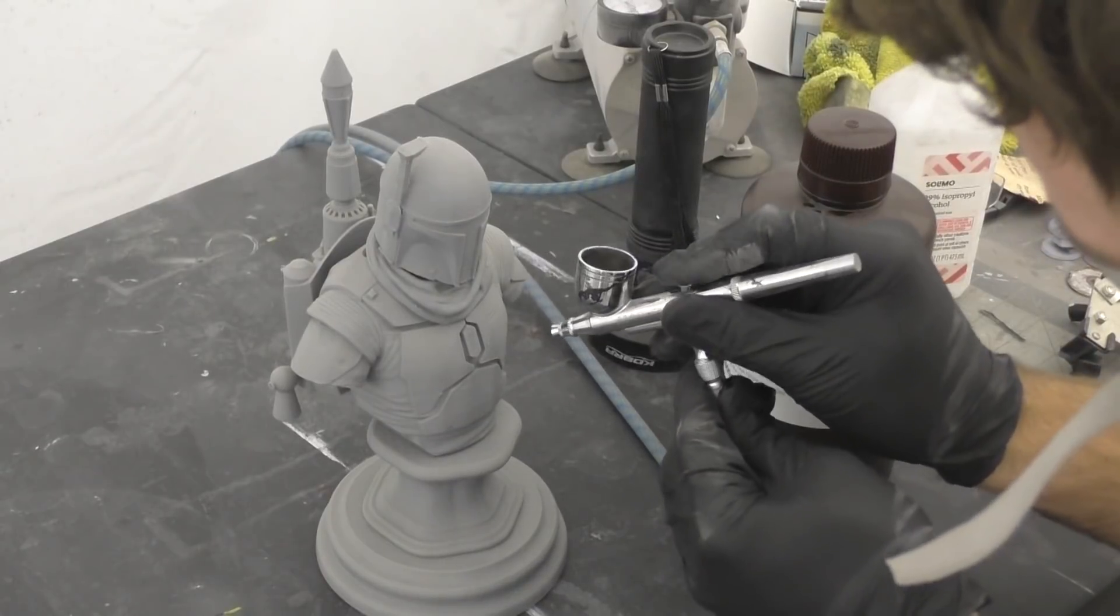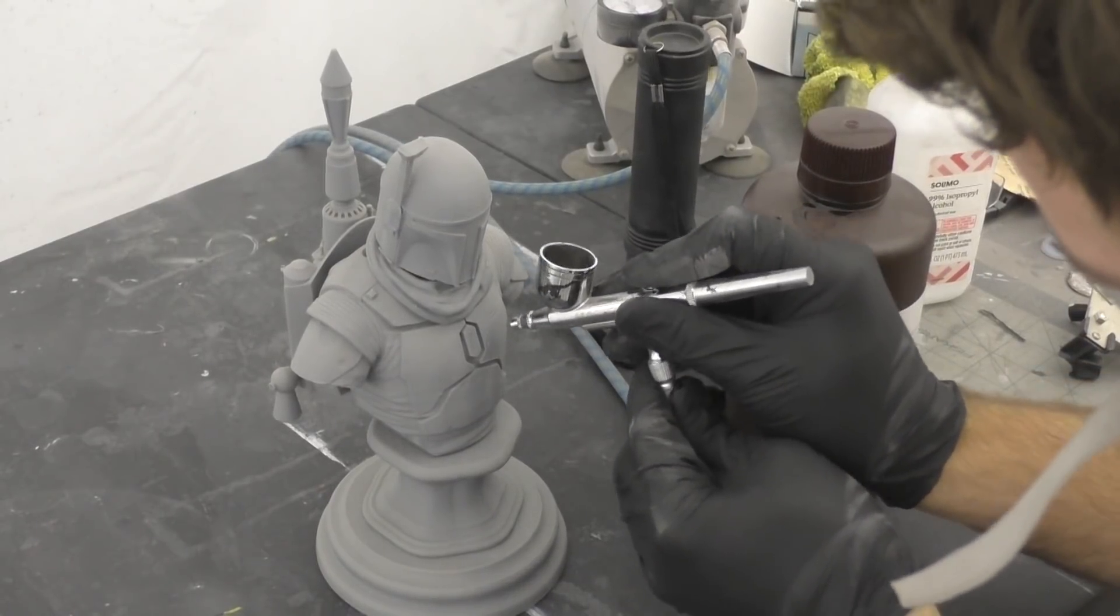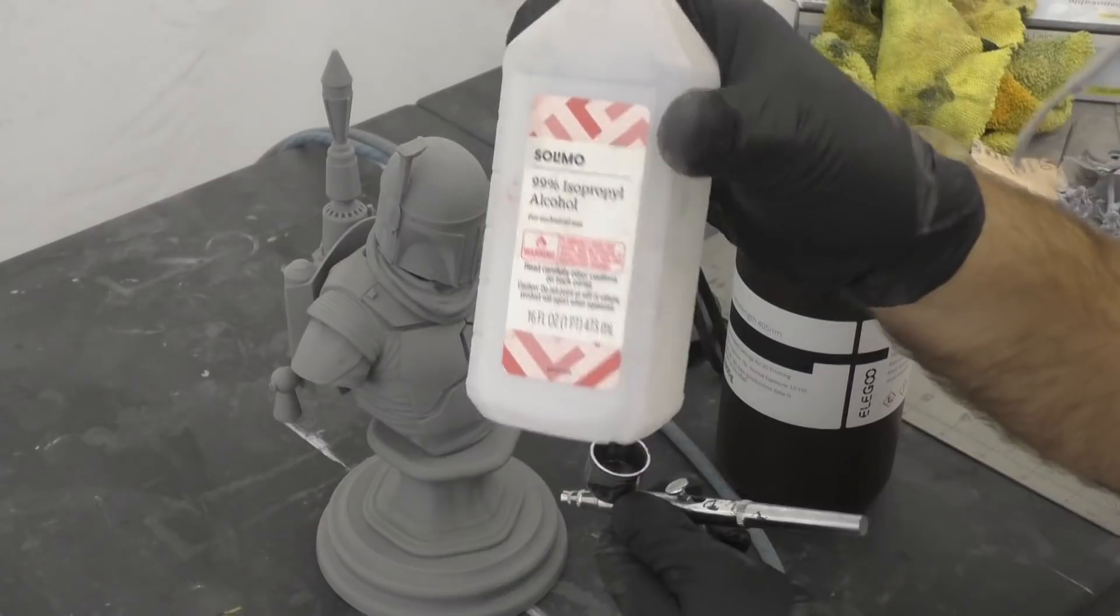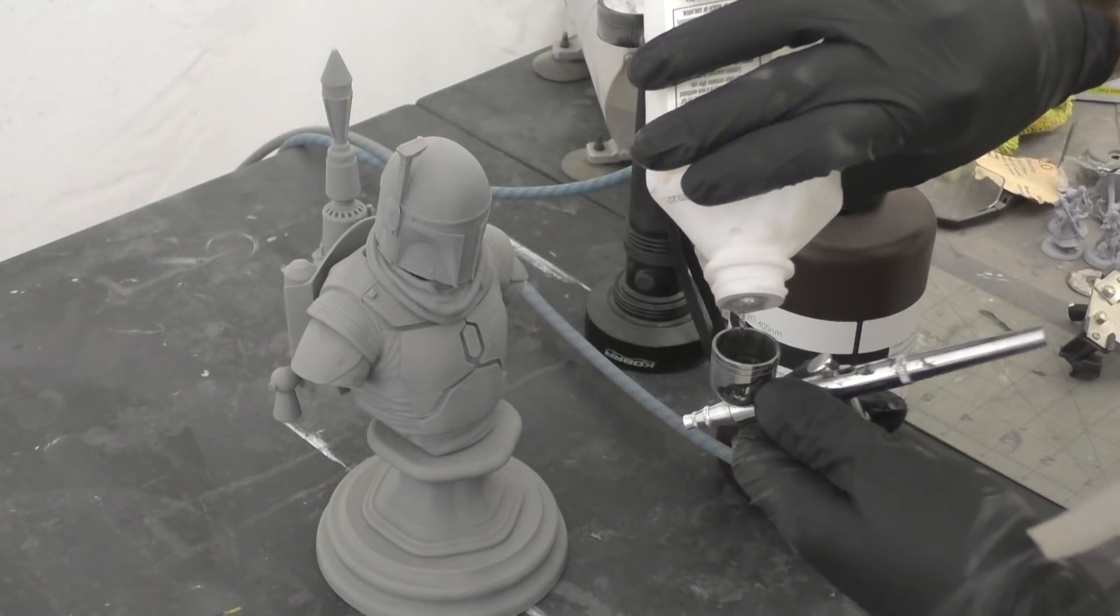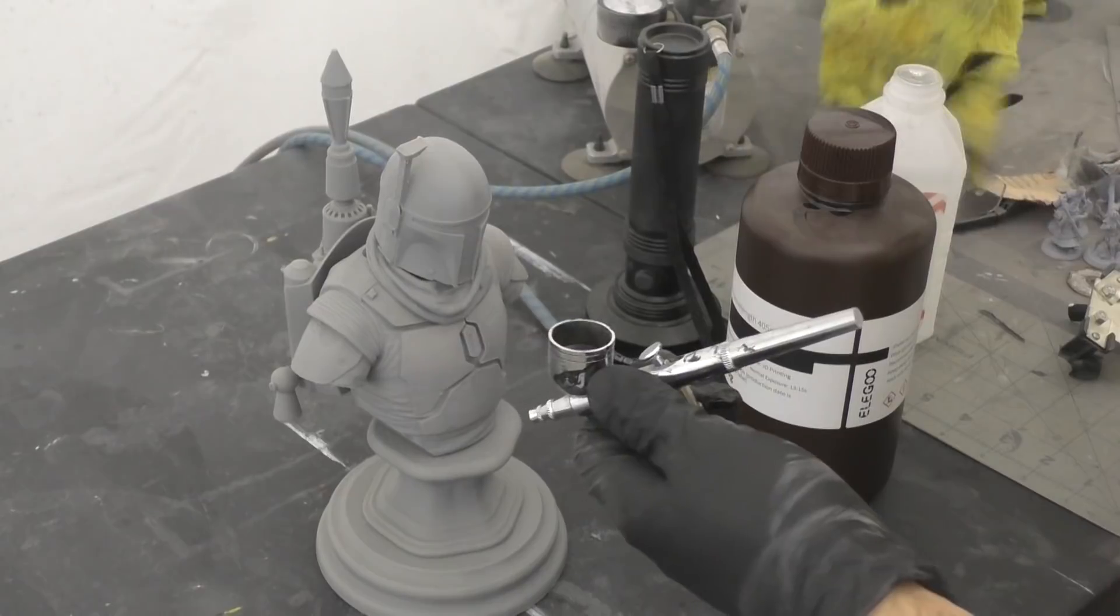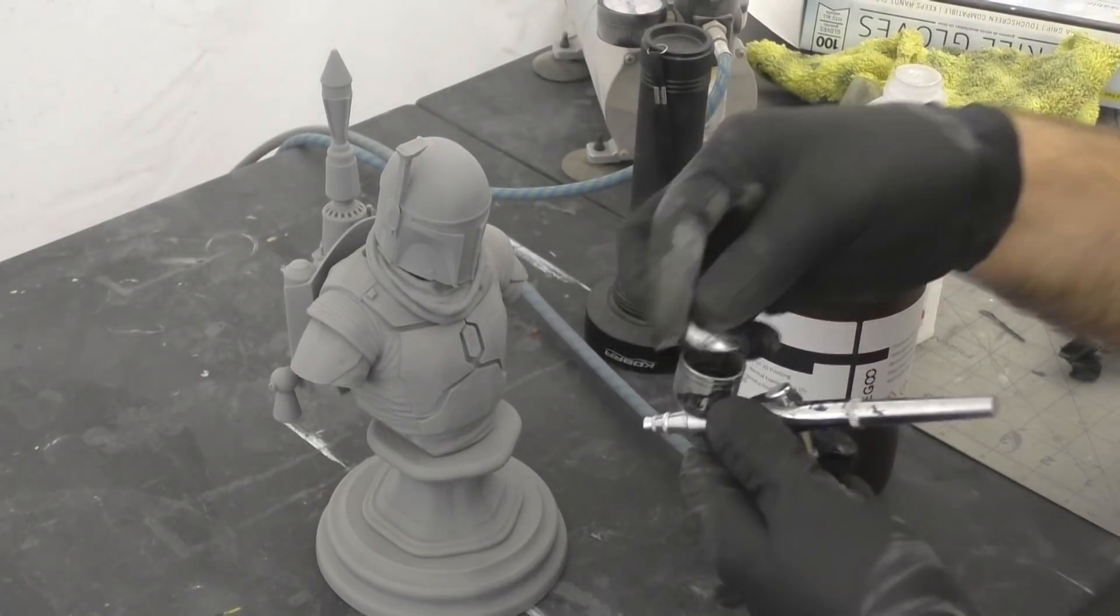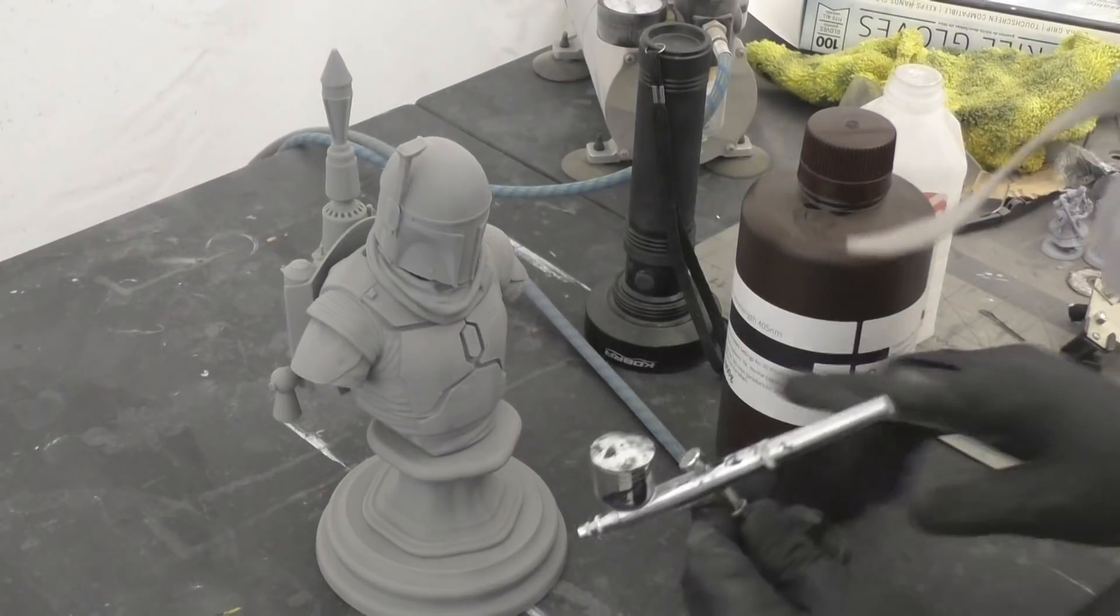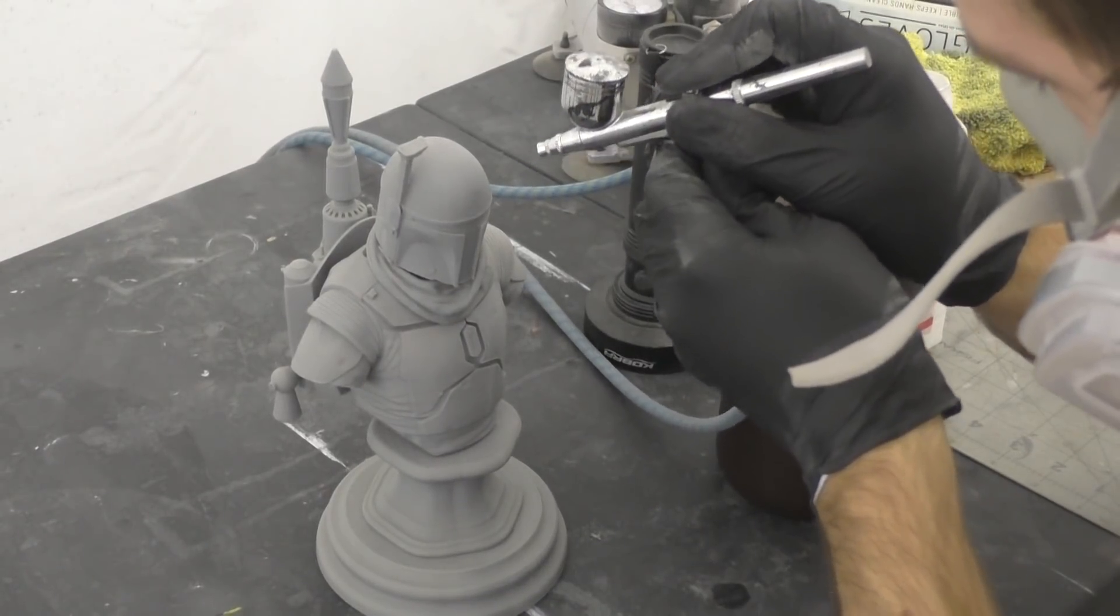The problem with just attempting to airbrush raw resin is that the viscosity makes it too thick to aerosolize very well, so we need to thin it out with a little bit of isopropyl alcohol. The ratio that I found works best was one to four alcohol to resin ratio. We don't want to thin out the resin too much to where it becomes watery and runny, but we do need to thin it if we want to get it through this airbrush.